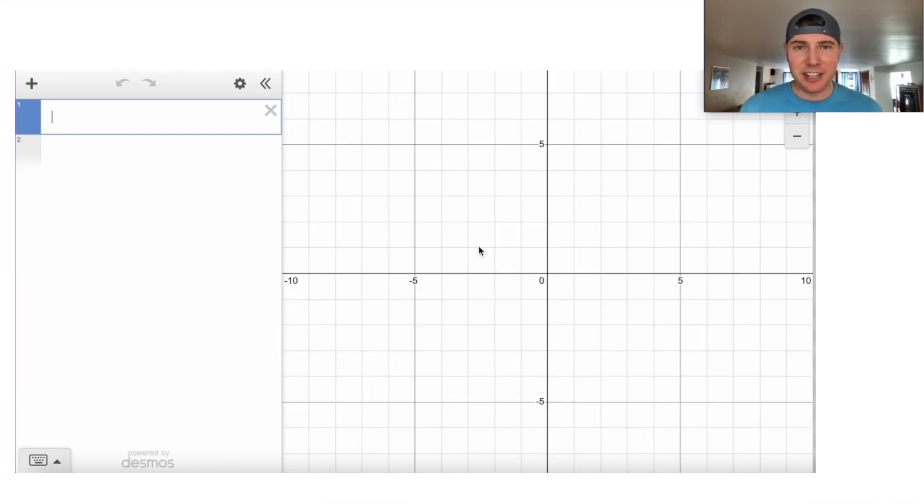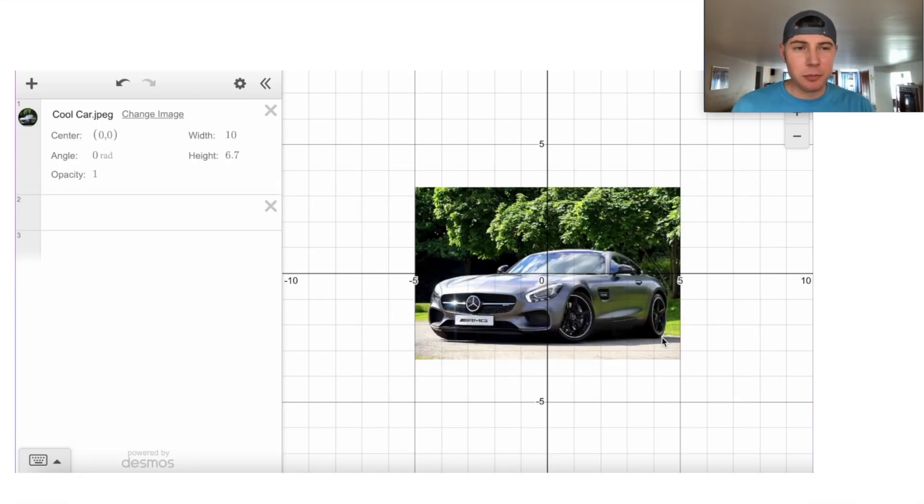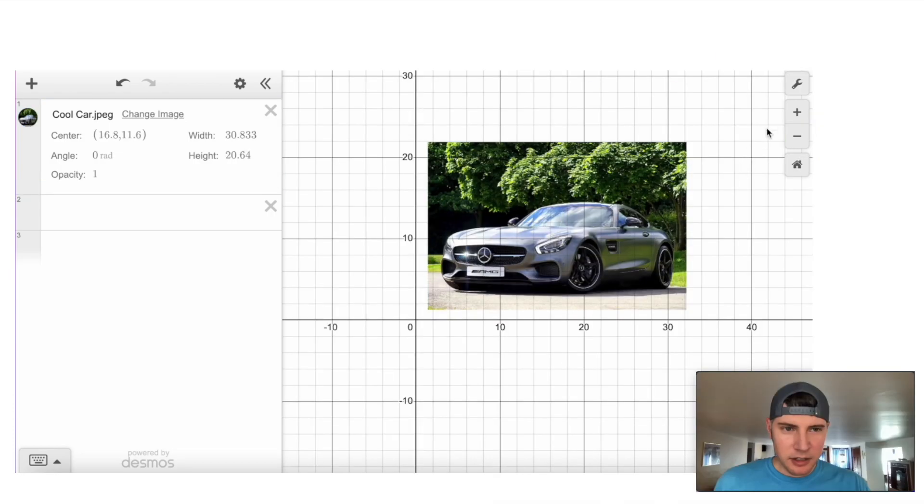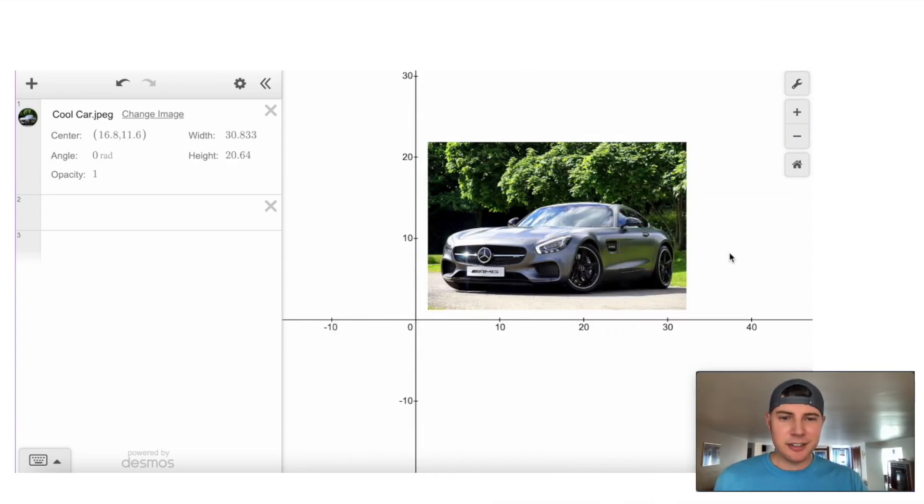And I want to show you a nice way you can do this on your own. First step, open up a fresh Desmos. Then drag in any image that you want. We have this nice looking Mercedes right here. Click on it and drag it where you want it to be. Let's get rid of the grid so we can click here and get rid of the grid. Okay, that looks nice.